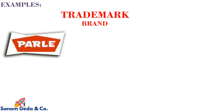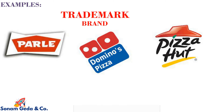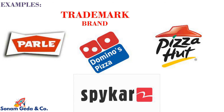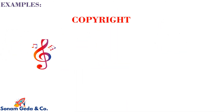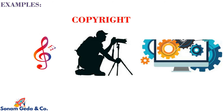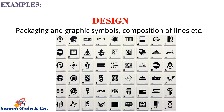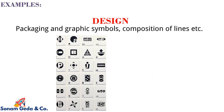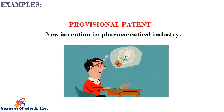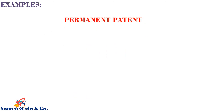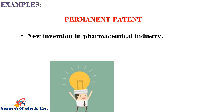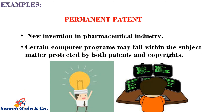Examples: For trademark/brand, examples include Parley, Domino's, Pizza Hut, Spycar, etc. Examples for copyright include music, pictures, songs, software, etc. Examples for design include packing and graphic symbols, composition of lines, etc. In case of provisional patent, an example is a new invention in the pharmaceutical industry. In case of permanent patent, new invention in the pharmaceutical industry; certain computer programs may also fall within the subject matter protected by both patents and copyright.